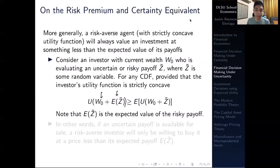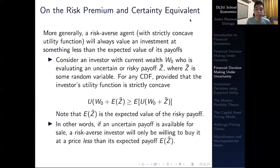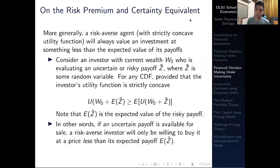The expected utility of Z-tilde is the expected value of the risky payoff. All this means is that if an uncertain payoff is available for sale, a risk averse investor will only be willing to buy it at a price less than its expected payoff. For example, if the most you could gain from a gamble is $10 as an uncertain amount, no rational person would pay $10 to participate, so the investor would be willing to pay a price less than the expected value of the payoff.